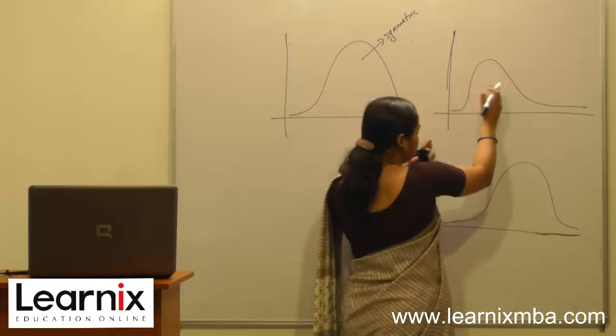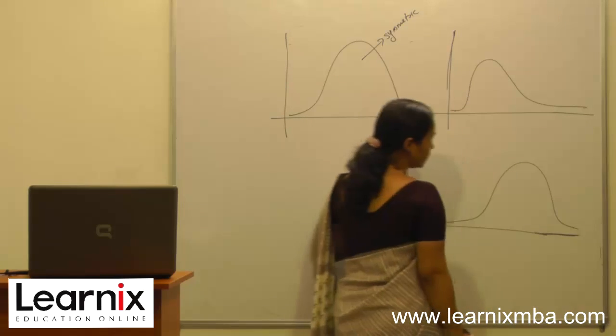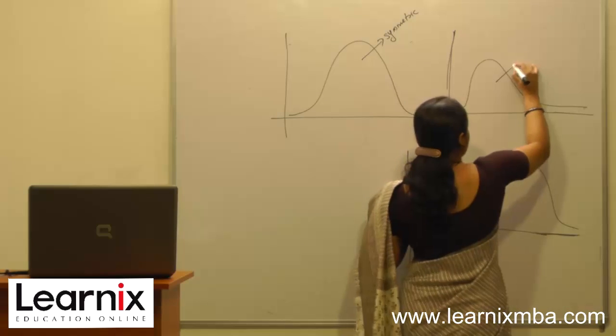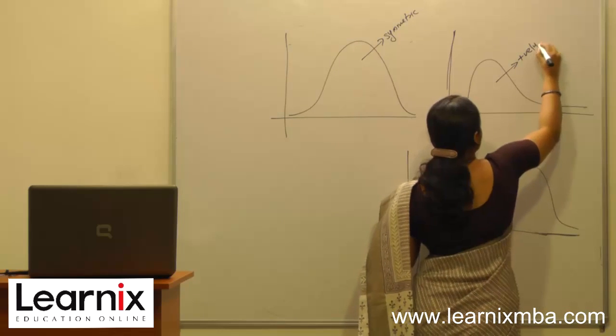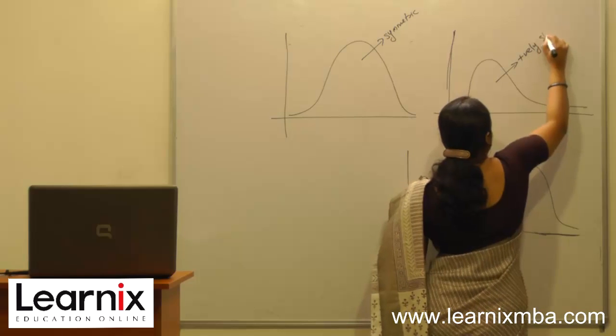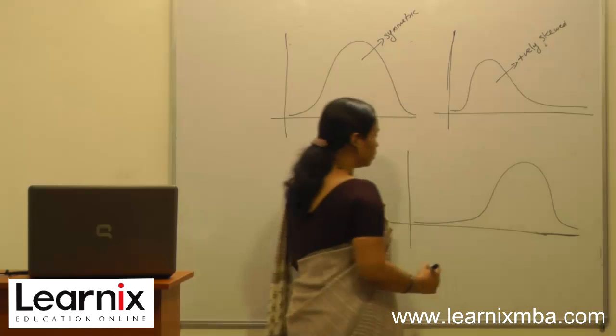There is a peak, it is concentrated around the left side and the tail is towards the right side. This type of distribution shows positive skewness, it is a positively skewed distribution.